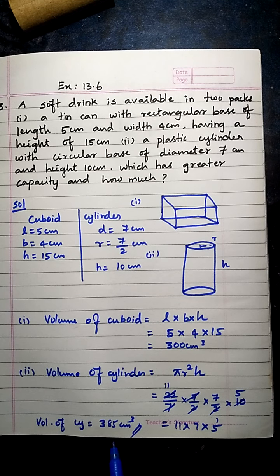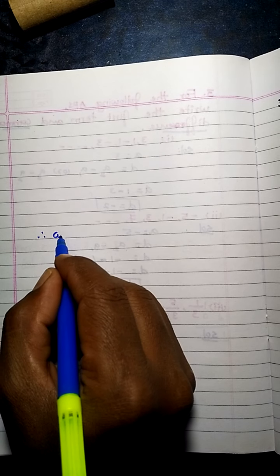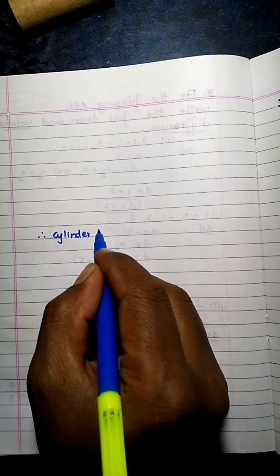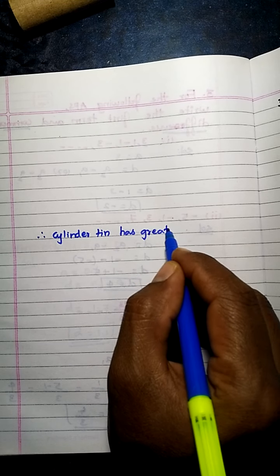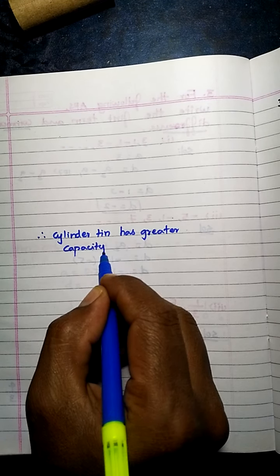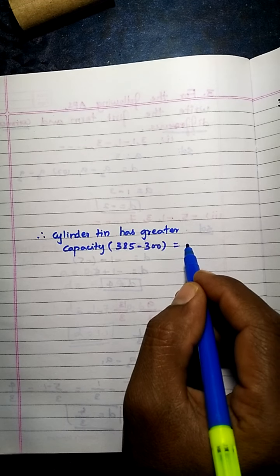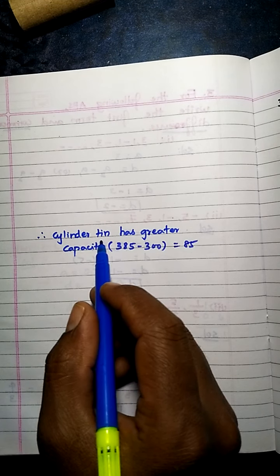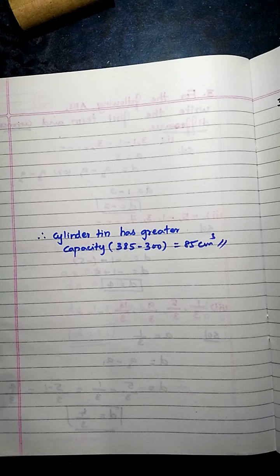Comparing: volume of cylinder = 385 cm³ and volume of cuboid = 300 cm³. The cylinder has the greater capacity. By how much? Subtract: 385 − 300 = 85. Therefore, the cylinder tin has greater capacity by 85 cm³.